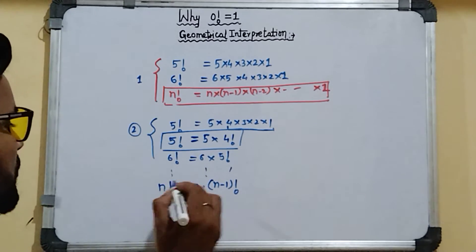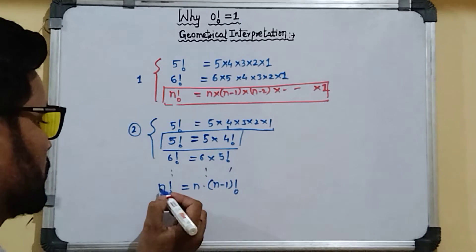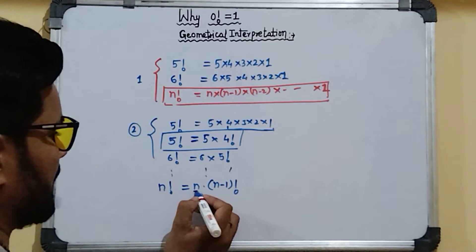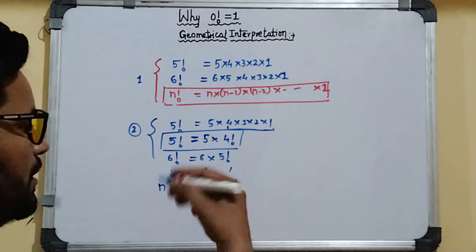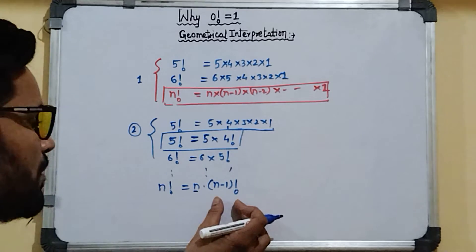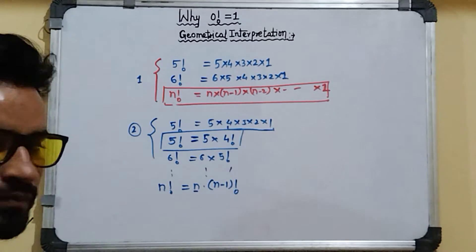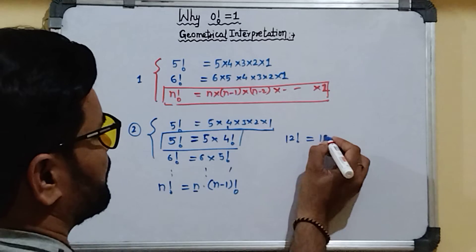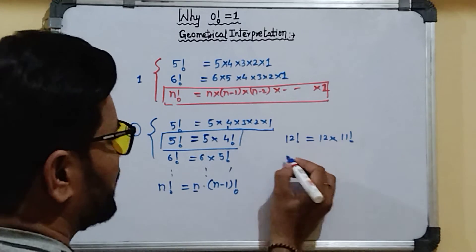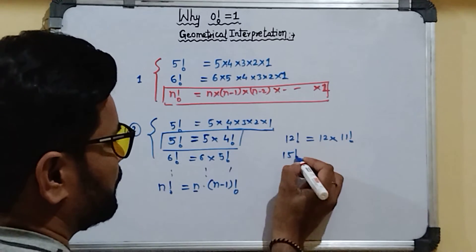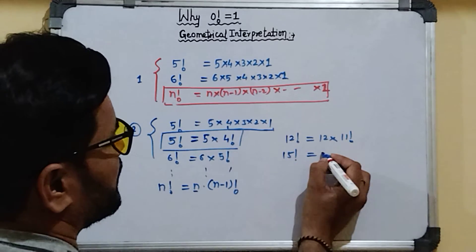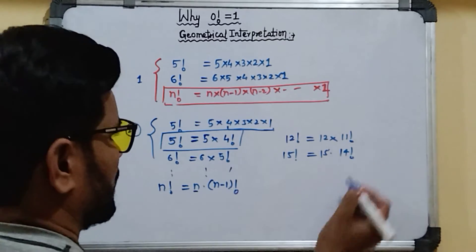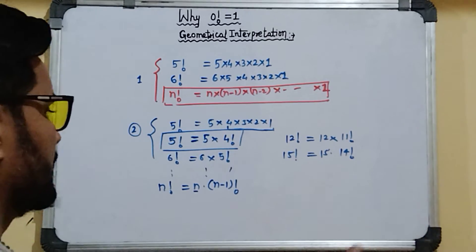So in general, we can write factorial n as n × (n−1)!. That means the factorial of any number equals that number multiplied by the factorial of one less. For example, factorial 12 can be written as 12 × 11!, and factorial 15 can be written as 15 × 14!.